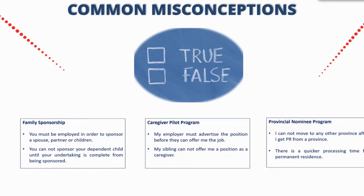For the Provincial Nominee misconception: I cannot move to any other province after I get my permanent residence from a province. This is not the case. When you submit the application, you do state your intention to reside in that province, and it's important to be honest at that time. But if circumstances change and you need to move to another province, once you have your permanent residency you are eligible to do so — whether in three years, one year, or less. They evaluate retention in the area, but it doesn't take your permanent residency away from you.